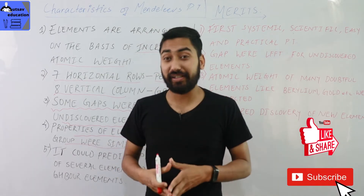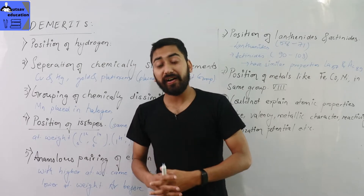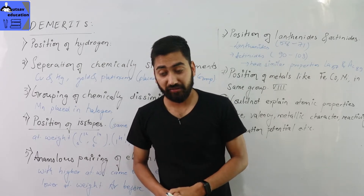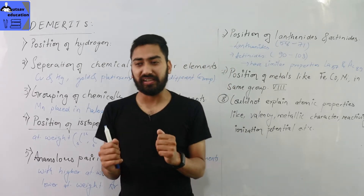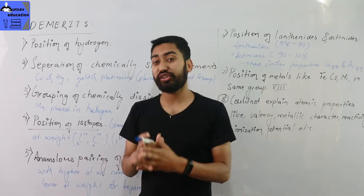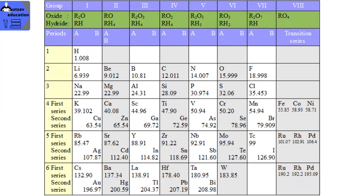Now let's study the demerits of Mendeleev's Periodic Table. What are the demerits? The first demerit is the position of Hydrogen. When the Mendeleev's Periodic Table was made, Hydrogen's position is unclear. If you arrange by atomic mass, Hydrogen appears at the first position.